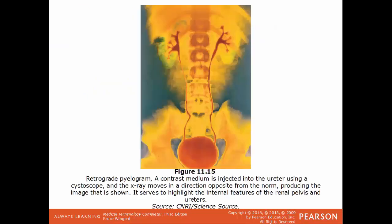Here's an example of a retrograde pyelogram. The contrast dye is injected into the ureters via a long tube. In this type of image you can see the renal sinuses, the ureters, and the bladder. Because the flow of the contrast medium is opposite to what urine normally does, it's classified as retrograde.